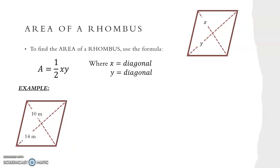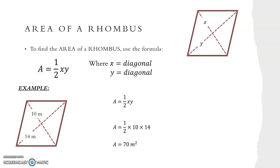To find the area of a rhombus we use the formula A equals a half XY, where X and Y are the diagonals. For our example we write out our formula A equals a half XY, and we have our diagonals of 10 metres and 14 metres. So we have A equals a half times 10 times 14. When we put this into our calculator we get that our area equals 70 metres squared.